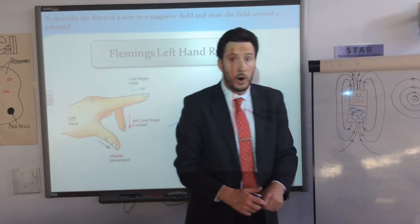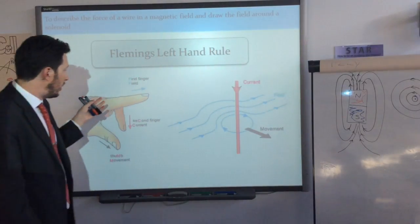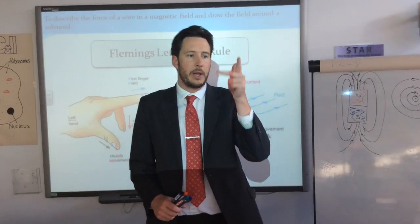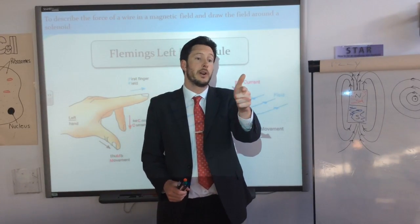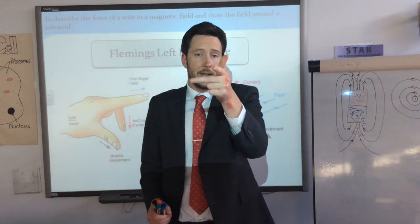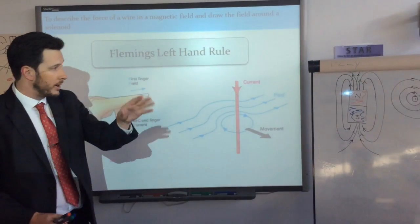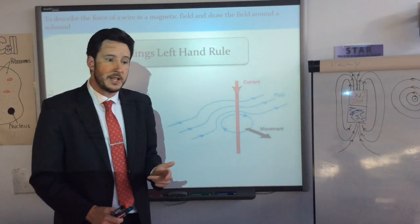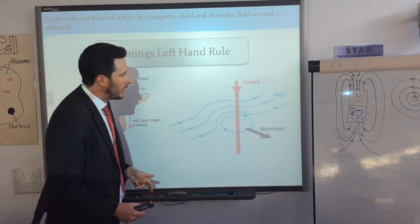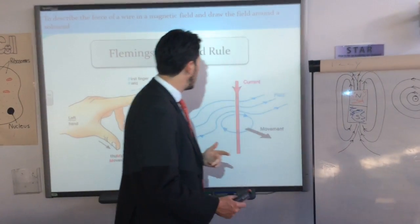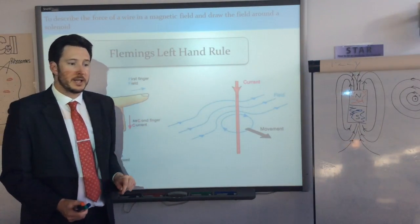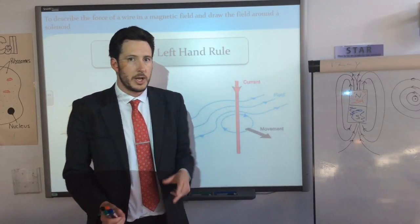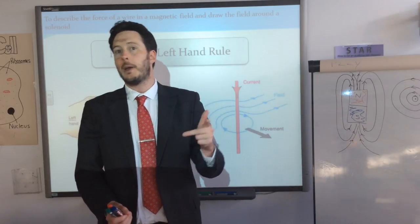The next hand rule to learn is Fleming's left-hand rule. It involves your left hand — make a gun shape, then put your second finger at 90 degrees to that, sticking outwards. The first finger points in the direction of the magnetic field. Your second finger goes in the direction of the electrical current. You need a wire with current passing through it placed in the middle of a magnetic field.